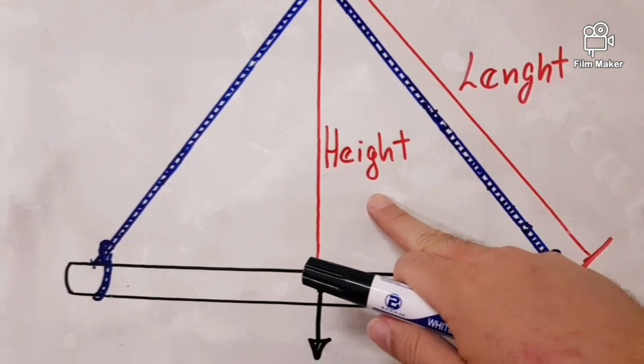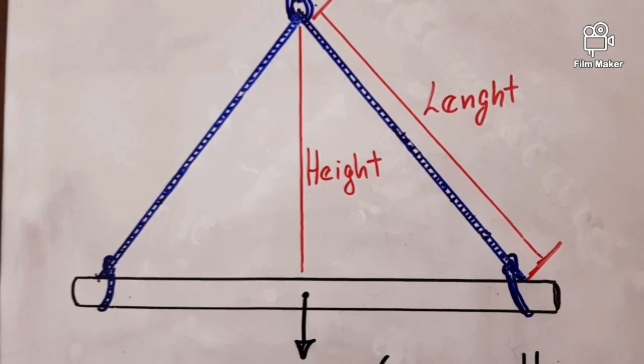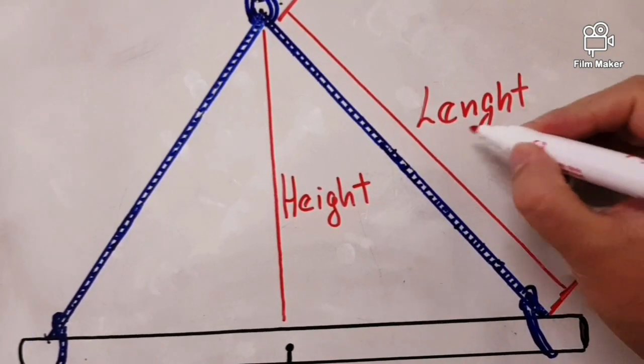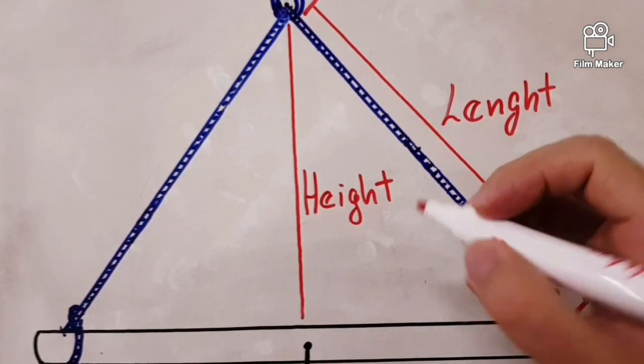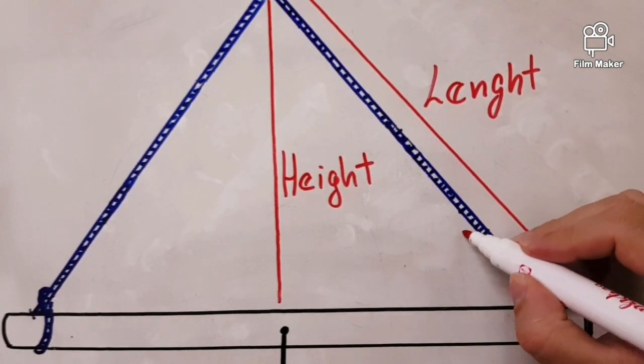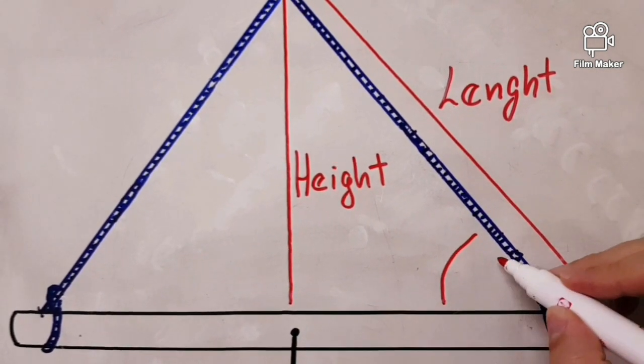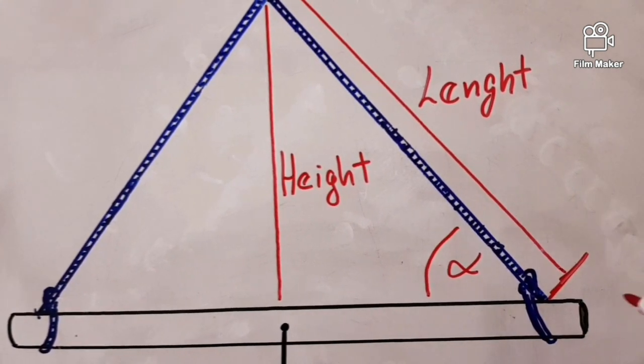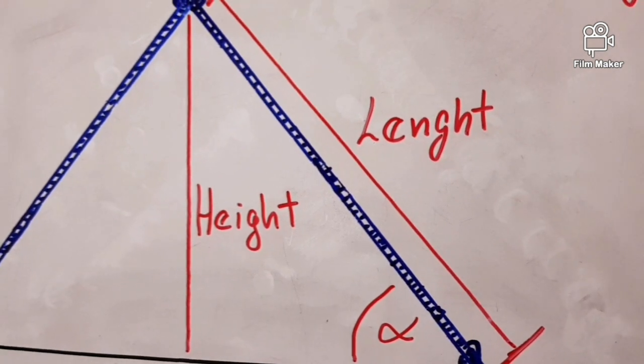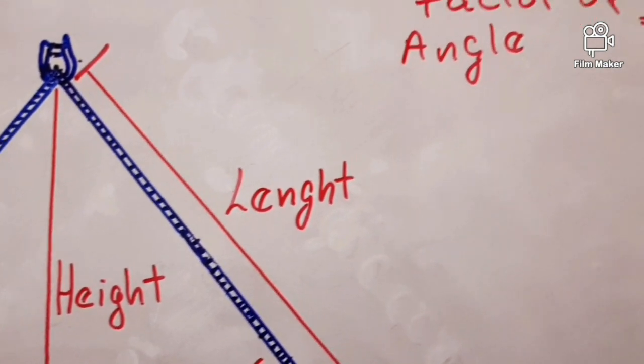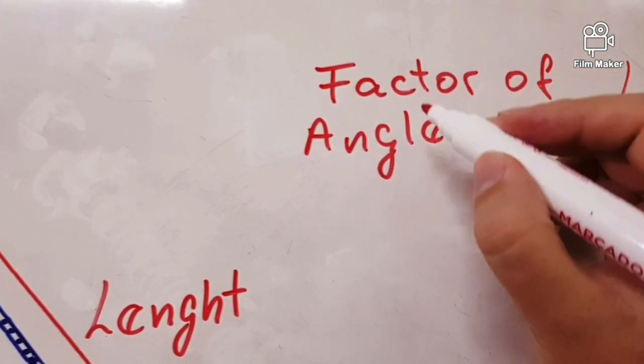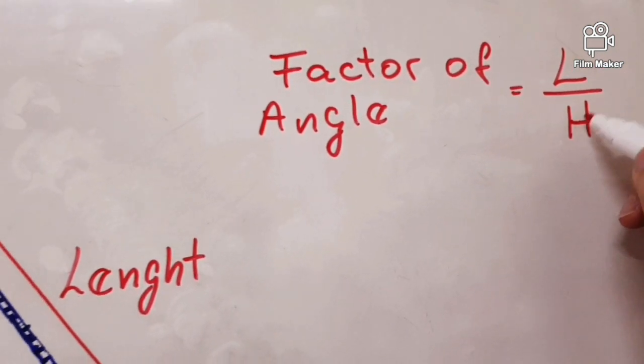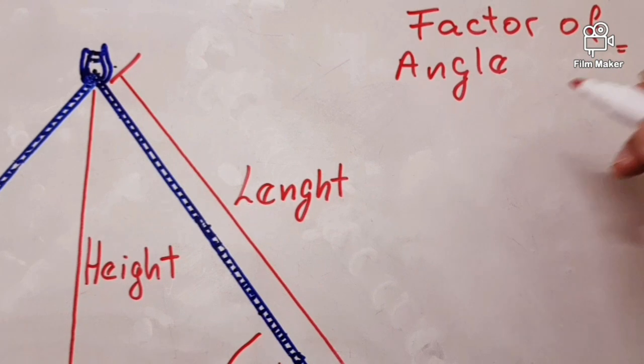But what happens if we don't have the length or the height? What could we do in that case? If we don't know the length or the height, we can use this horizontal angle.